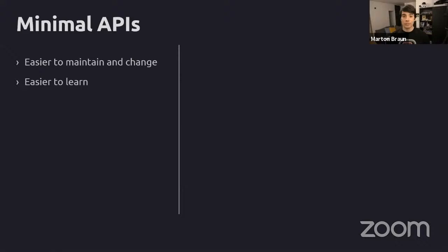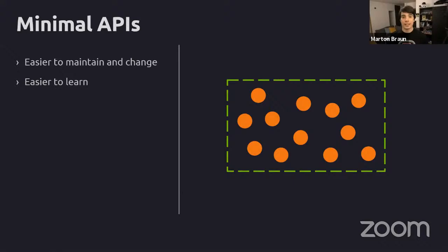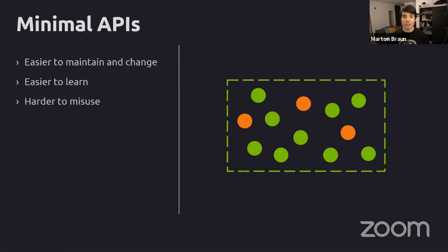Another good reason for minimal APIs is that they are easier to learn. If everything in a library were public, you'd have a harder time figuring out which classes to instantiate and which methods to call. If instead there are only a couple of public classes and a few dozen public methods, it's very easy to learn - you can discover available functionality just through auto-completion. On the flip side, a minimal library is also harder to misuse, which is great, because as a library author you have to assume users won't always know how to use it correctly.